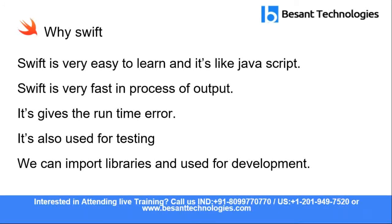Swift is very fast in the process of output. Objective-C is 2.6 times faster than Swift. It gives runtime errors — we are using code types. If we have a code type, there is a syntax error. If you have a syntax error, we will handle that.